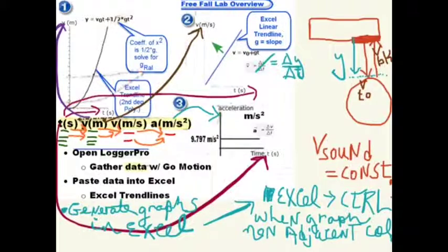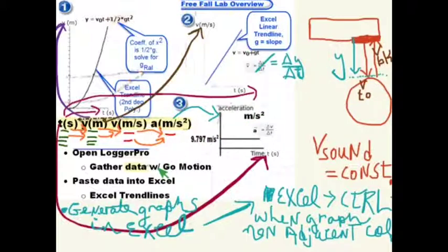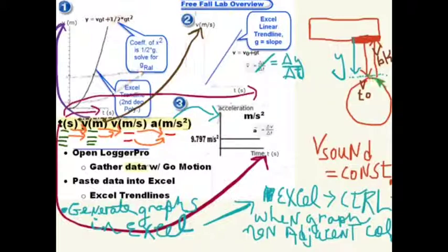Now let's generate the data using the GoMotion device. Go to your desktop, open the LoggerPro software, and follow the detailed instructions on the back of the lab. Basically, the GoMotion device will send out a sonic pulse at equal time intervals as the basketball falls to the floor. The speed of sound is constant, so this is a distance = rate × time calculation. The GoMotion device knows when it sent the pulse and when it receives it back, so it can calculate the Y position data for the basketball as it falls.